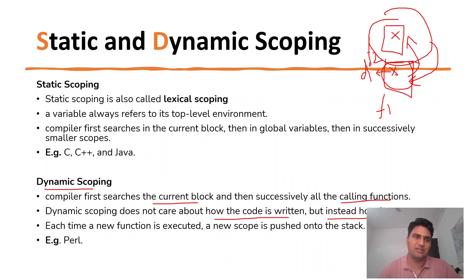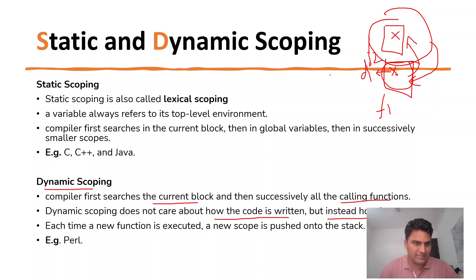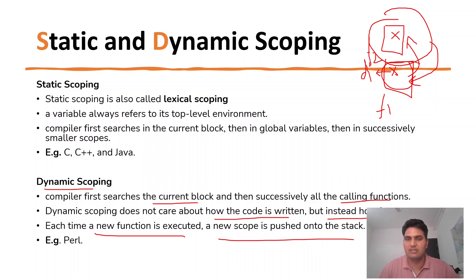That is why we call static scoping faster — the execution time is faster because there is no need for runtime lookups. In dynamic scoping, the lookups are required at runtime, so it is slower. Each time a new function is executed, a new scope is pushed onto the stack. I will show you an example of how to use dynamic scoping.